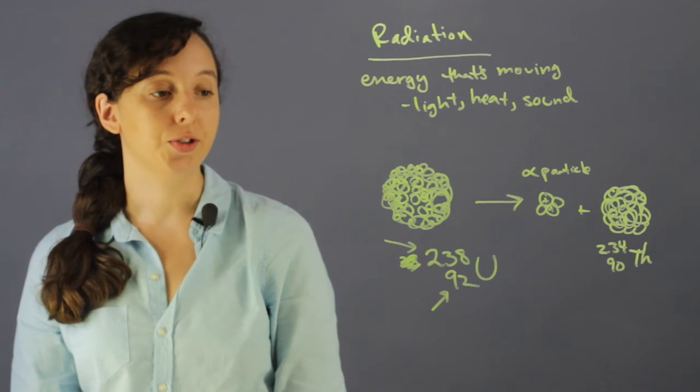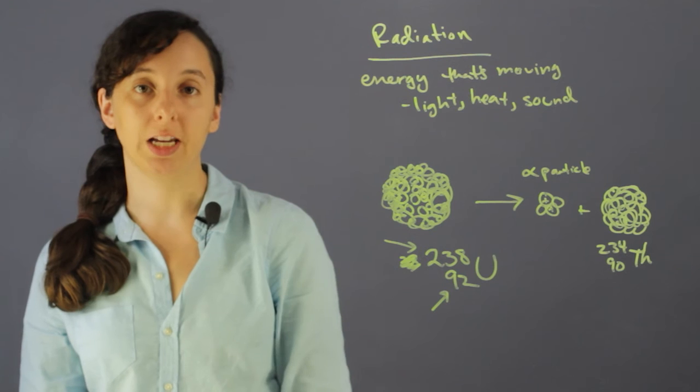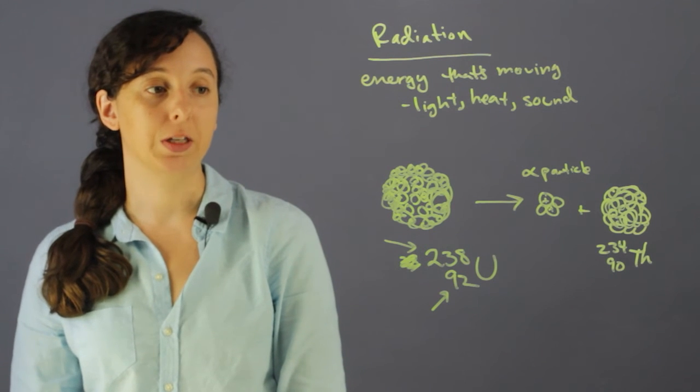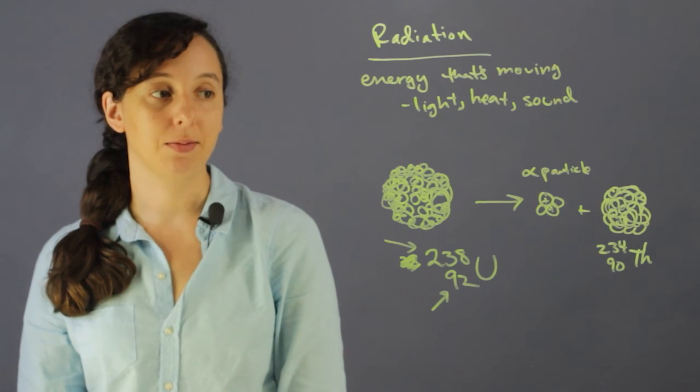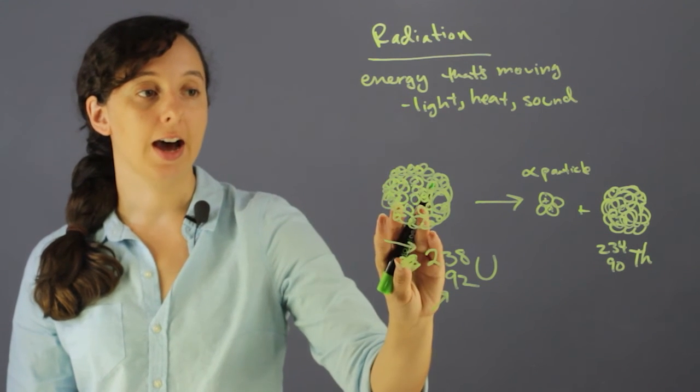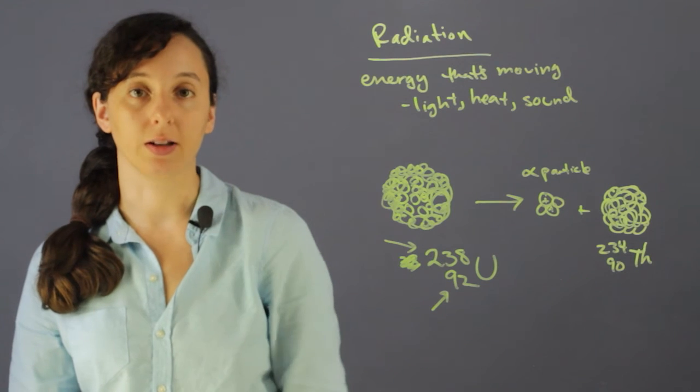So this happens spontaneously because uranium 238 is just unstable. And it actually happens at a very specific half-life. So a lot of radioactive decay has specific timelines of how likely a specific group of atoms is to decay and how long that takes.